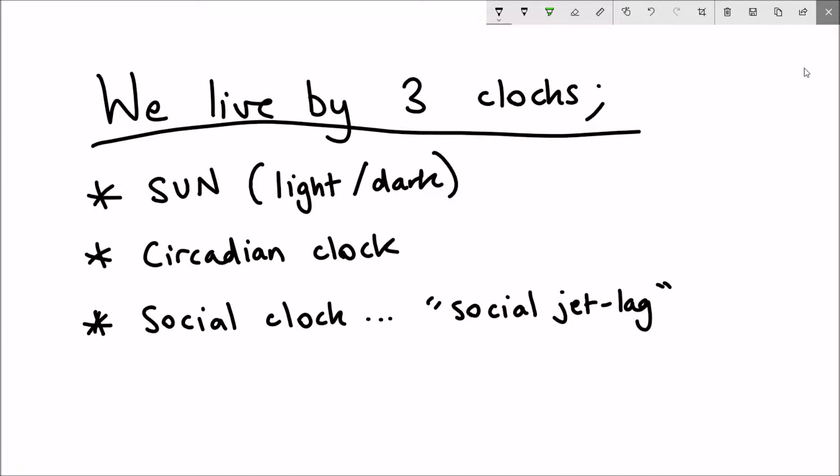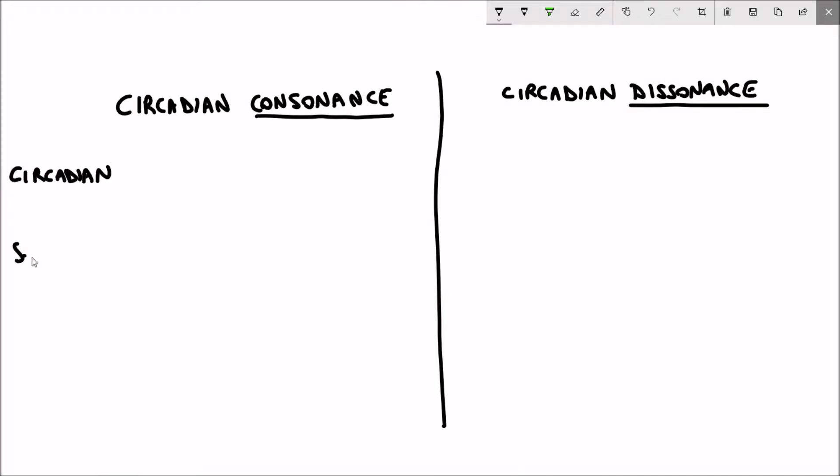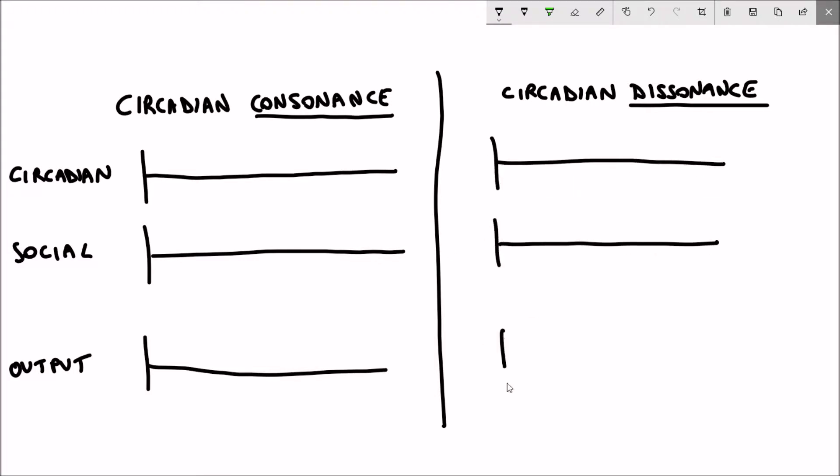To be really crude and oversimplified, we can think that if these three clocks are aligned with each other, they are constructive in terms of their interference. This is referred to as circadian consonance. However, if these clocks are out of line with each other, out of sync, it can cause disease. This is referred to as circadian dissonance.